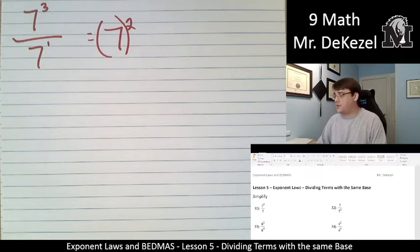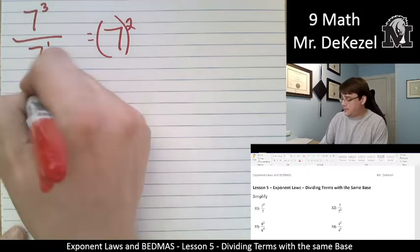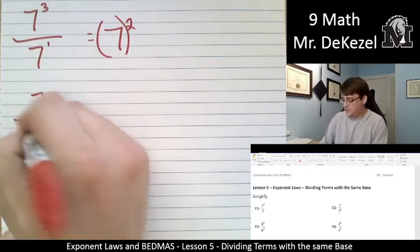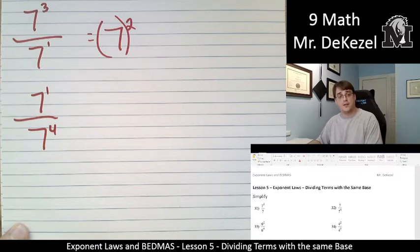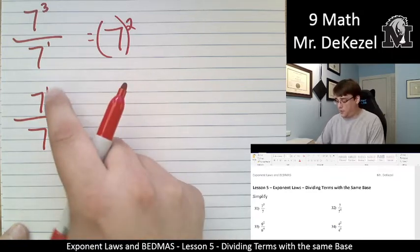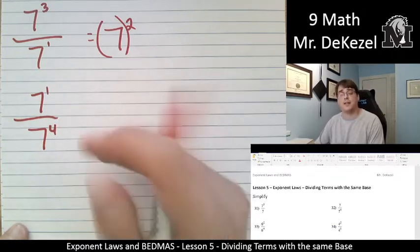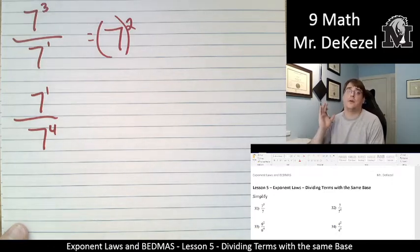Let's slide to the right and do number 32. So this is 7 over 7 to the power of 4. Again, this is to the power of 1 if there's nothing there. So in this case, we are doing 1 minus 4. And 1 minus 4, we're going across the 0. We're becoming negative.